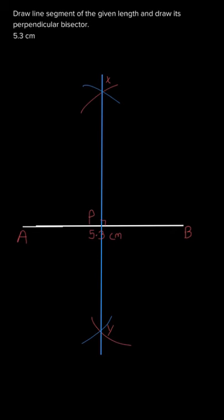Also it will intersect AB into two equal parts, right? So AP will be equal to PB. So I will show that also.